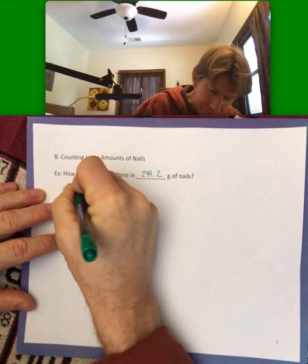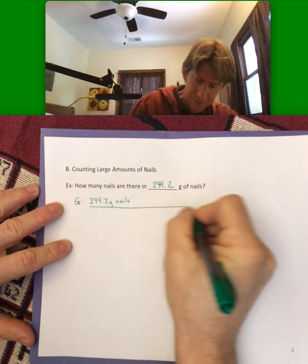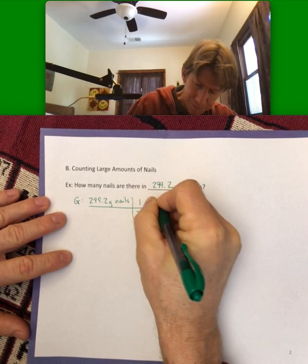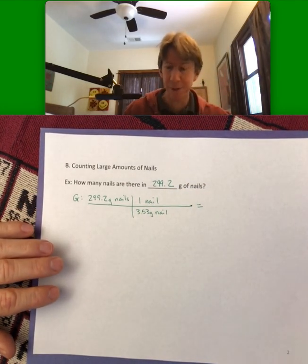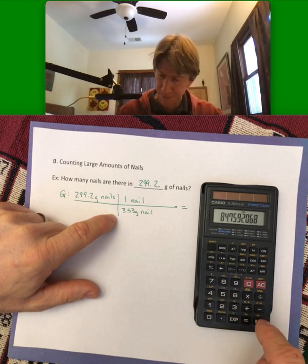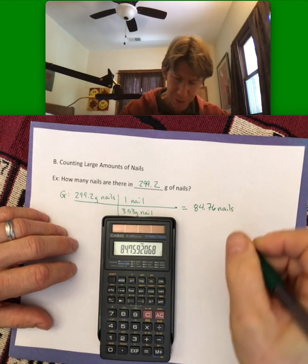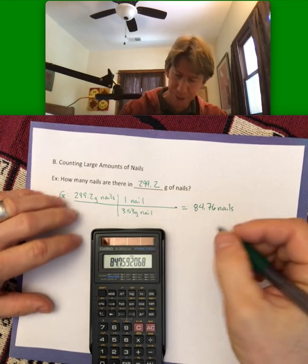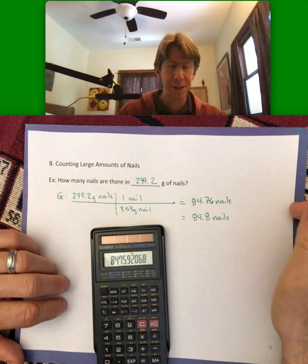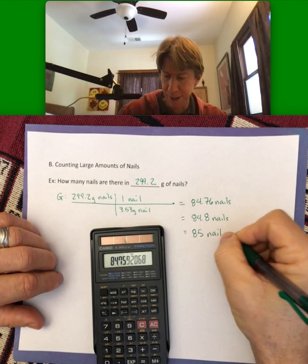How many nails are there in 299.2 grams of nails? Grams is our mass unit and nails are our equivalent to atoms. We're given 299.2 grams of nails, and our conversion factor is 3.53 grams per nail. So 299.2 divided by 3.53 gives 84.76 nails. That's too many significant figures — I should round to three — so 84.8 nails. Since we can only have a whole number of nails, I'm going to round to 85 nails.